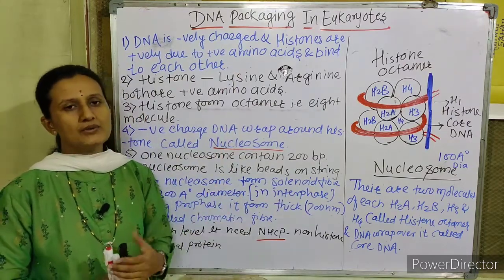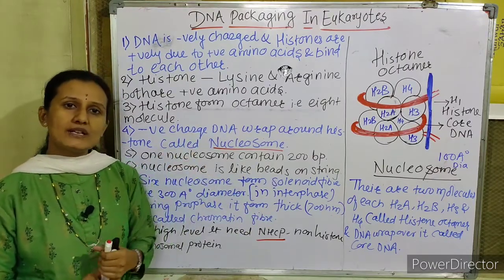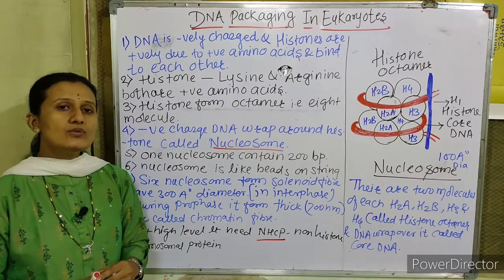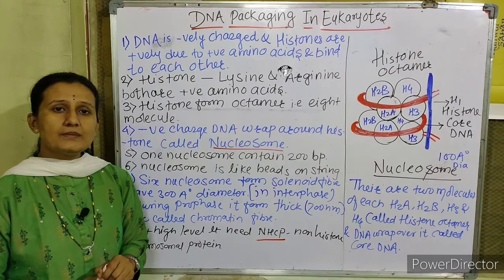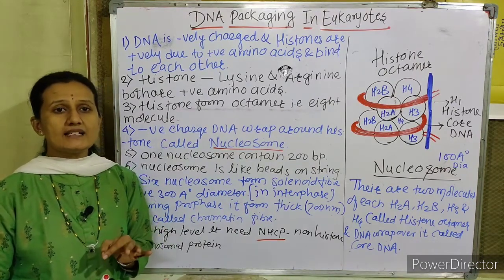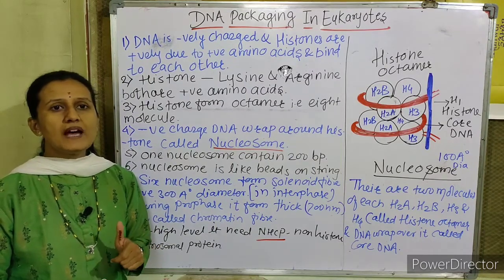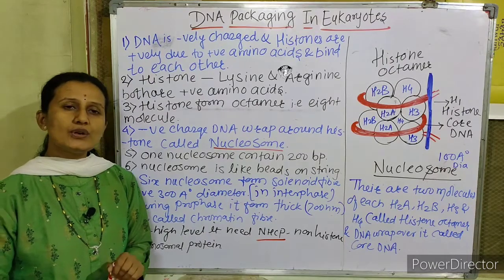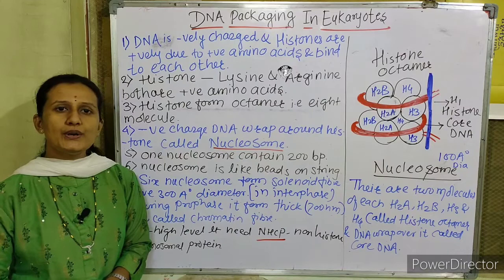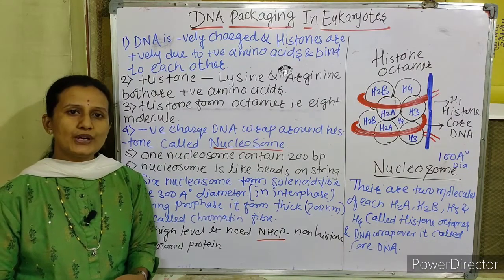As we know, human cells have genetic material of up to three billion base pairs. The length of DNA is calculated as the total number of base pairs multiplied by the distance between two consecutive or successive base pairs, and that length is about 2.2 meters. That means the length of human DNA is about 2.2 meters.